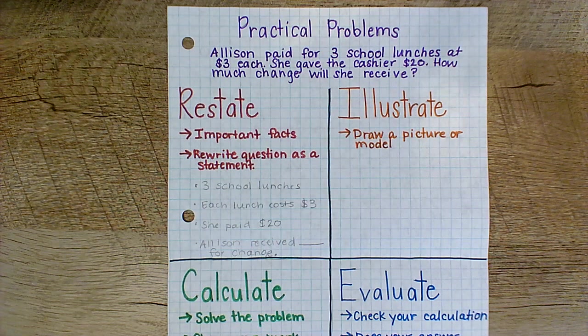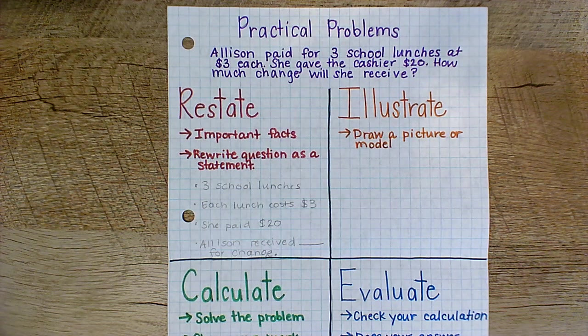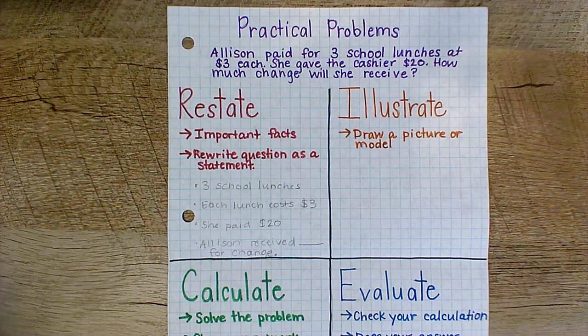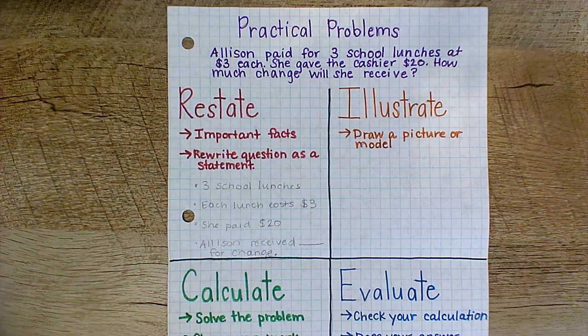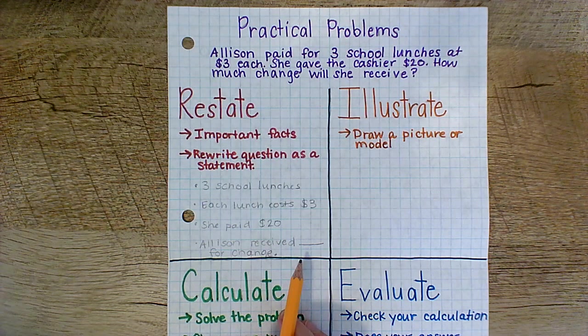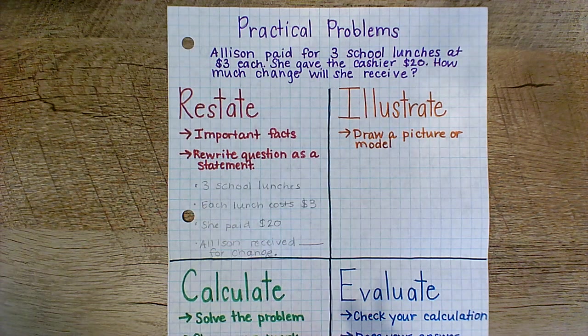So blank for change. Now I can think about this blank is what I am trying to answer. Okay, we know she bought three school lunches. Each lunch costs three dollars. And she paid twenty dollars to the cashier. So now we can think with those facts, we can fill in the blank for this last statement. Allison received blank for change.